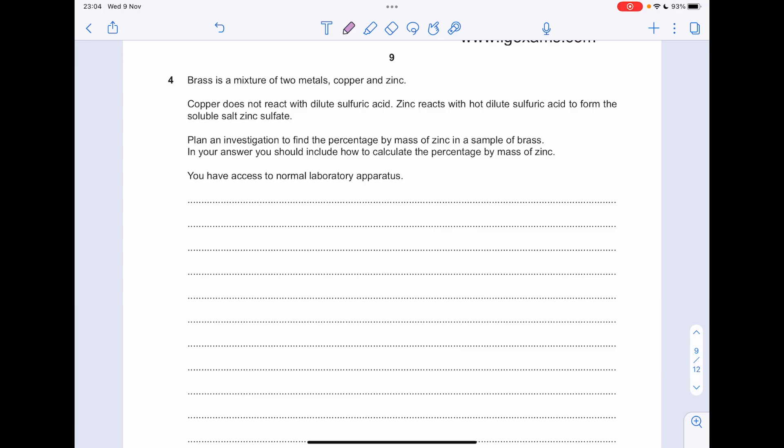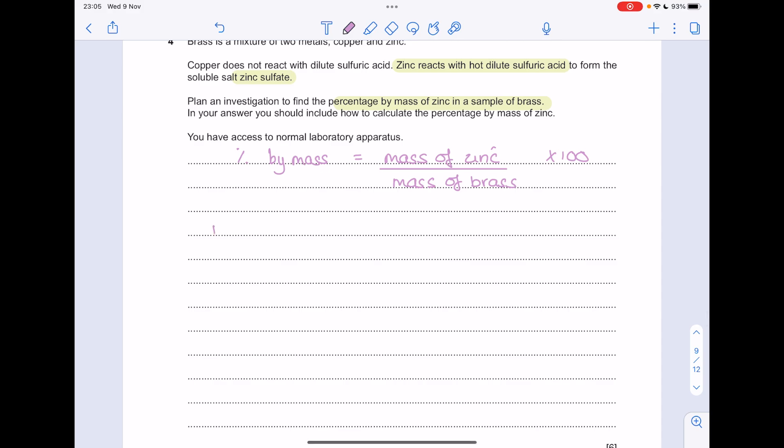We're trying to find the percentage by mass of zinc in a sample of brass. And we know that zinc reacts with dilute sulphuric acid in order to form the salt, zinc sulphate. So if we can get that zinc in that brass to react, to form that zinc sulphate, having measured the mass of brass to begin with and then measuring the mass of the brass afterwards. Experimentally, how are we going to do that? First of all, measure the mass of brass using a balance.